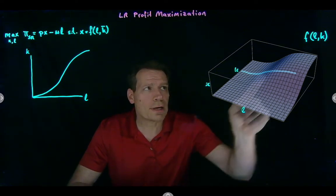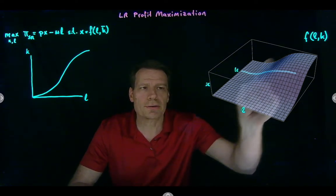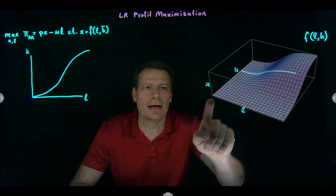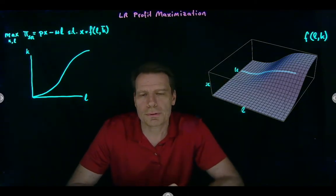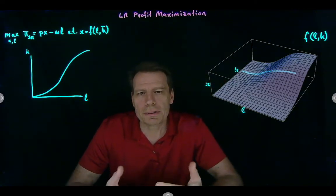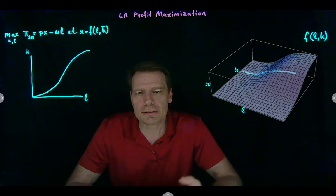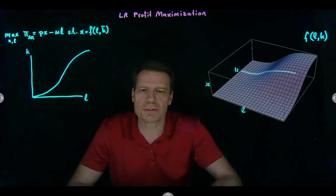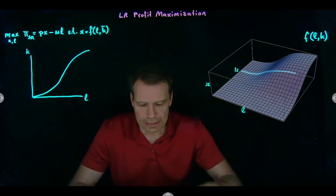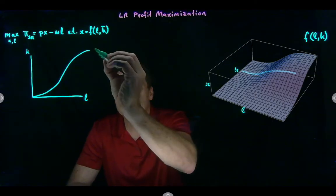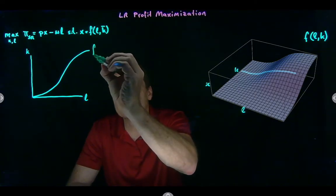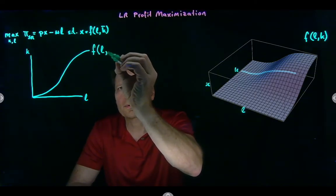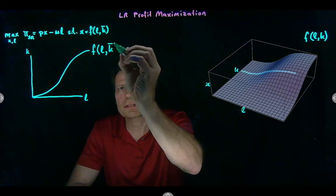We began by saying that a production function tells us for any combination of labor and capital how much output we're going to be able to produce. But in the short run, we hold capital fixed, and so we operate on a slice of that production function. That slice can be graphed in two dimensions, and it's simply that production function as a function of labor with capital held fixed.